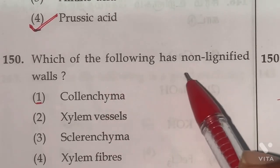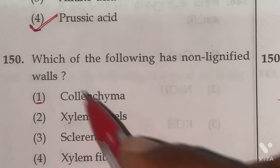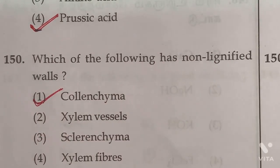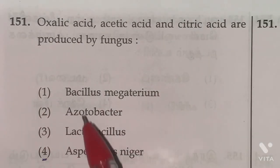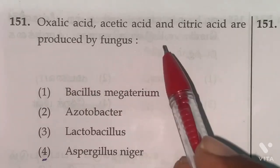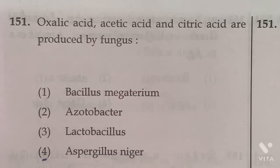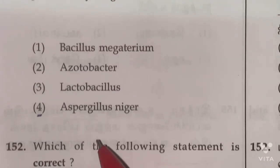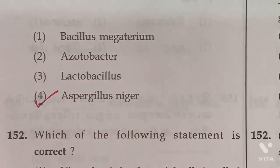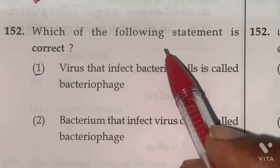Question 150: Which of the following has non-lignified walls? Collenchyma. Option one is the right answer. Question 151: Oxalic acid, acetic acid, and citric acid are produced by the fungus Aspergillus niger. Option four is the right answer.